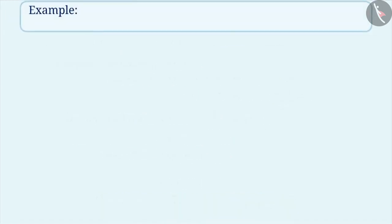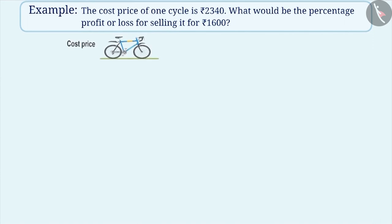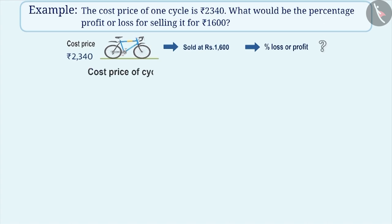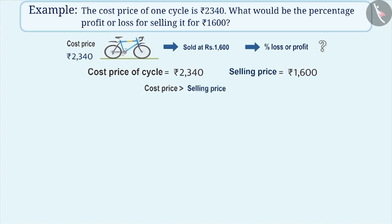Example 2: The cost price of one cycle is 2,340 rupees. What would be the percentage profit or loss for selling it at rupees 1,600? Cost price of the cycle is equal to 2,340 and selling price is 1,600 rupees. Here, cost price is greater than the selling price, which means this has resulted in a loss.